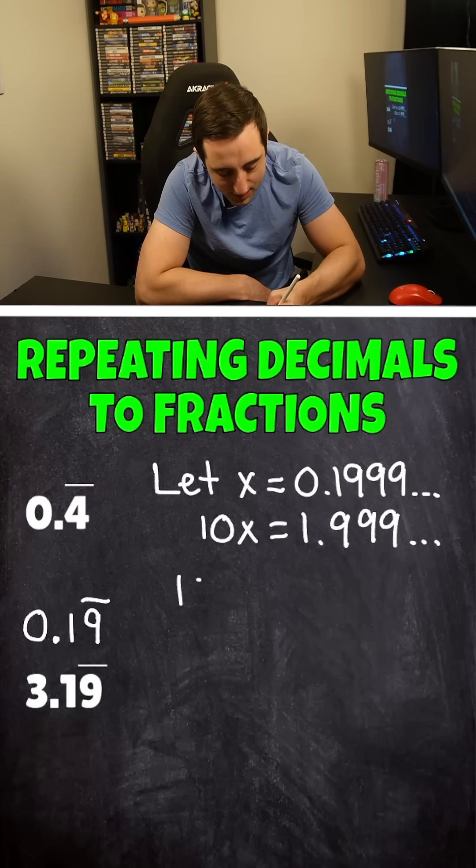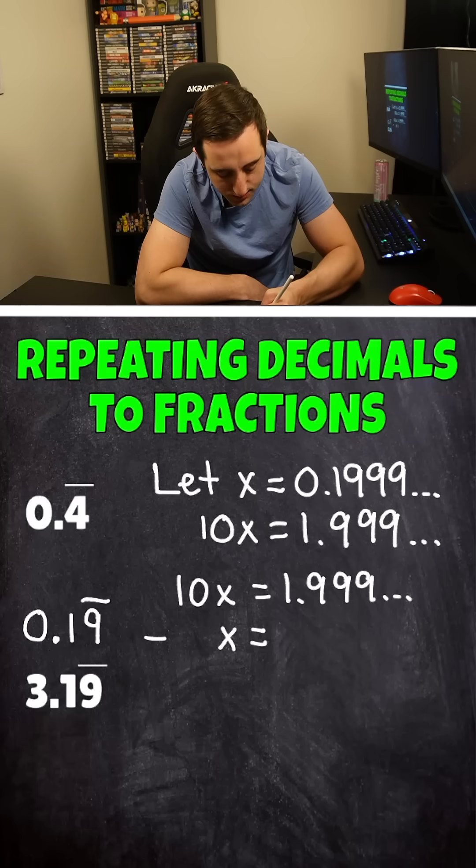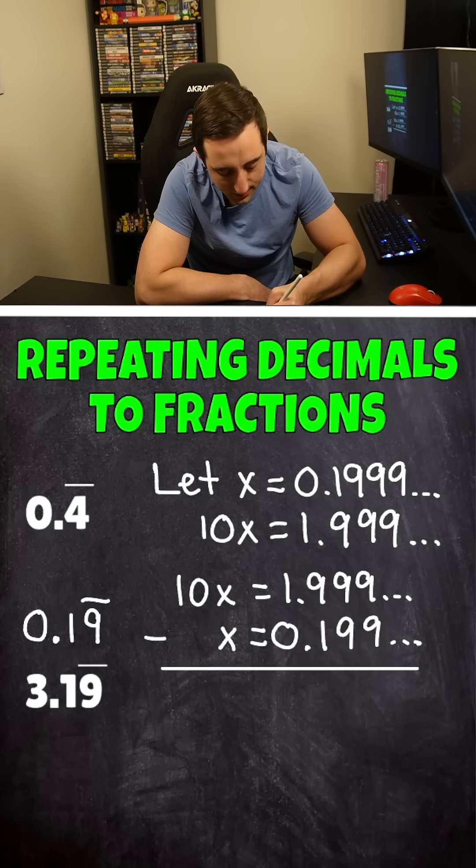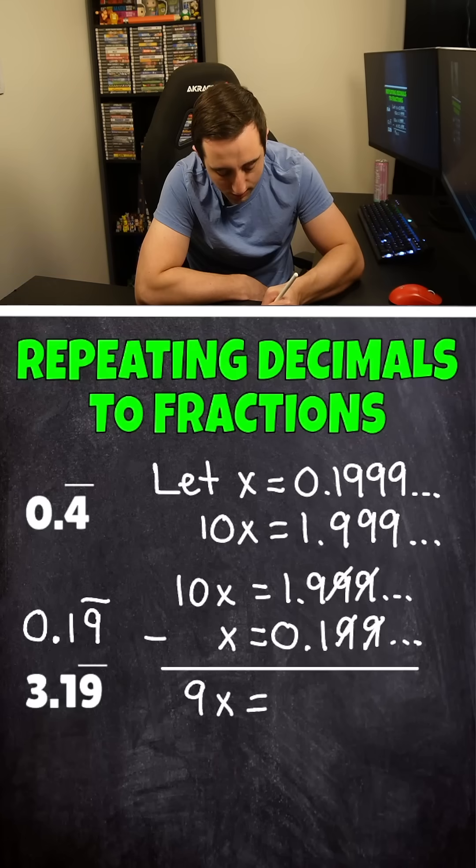And now we can go ahead and subtract these. 10x is equal to 1.9 repeating. Line up the variables again, the equal sign, the place values, the decimal point, and now we can subtract once again. 10x minus 1x is 9x. Our 9s that are repeating are going to cancel. However, a little bit different scenario, we end up getting 1.8 when we subtract here.